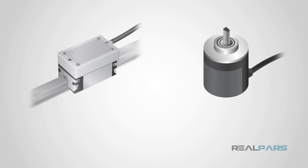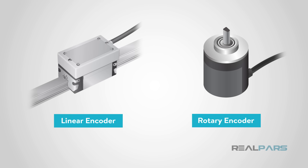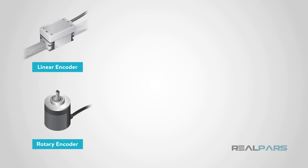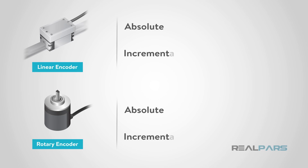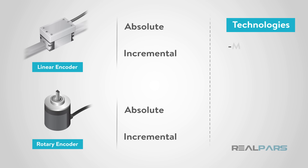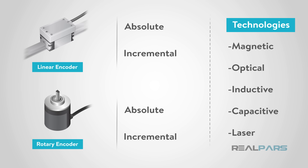There are many types of encoders, but they basically fall into two main sensing techniques, those being Linear and Rotary. Within those categories, there are differing encoder measurement types such as Absolute and Incremental. There are also various electromechanical technologies such as Magnetic, Optical, Inductive, Capacitive, and Laser, to name a few.